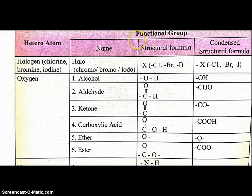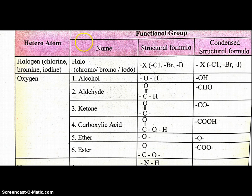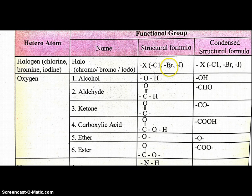Some important functional groups: heteroatoms, names, structural formula, and condensed structural formula. First, halogens — chlorine, bromine, iodine — name: halo, like chloro, bromo, iodo. Structural formula represented by X; condensed structure also X.